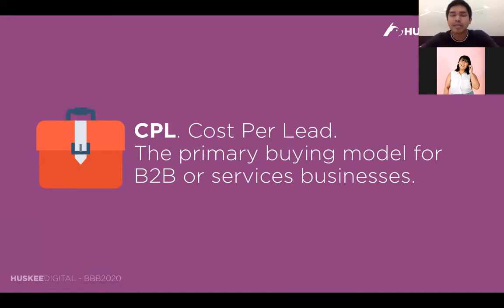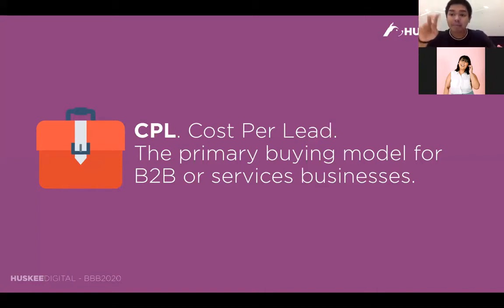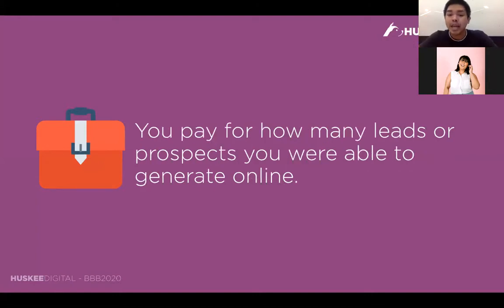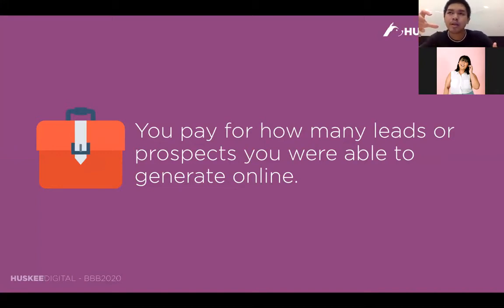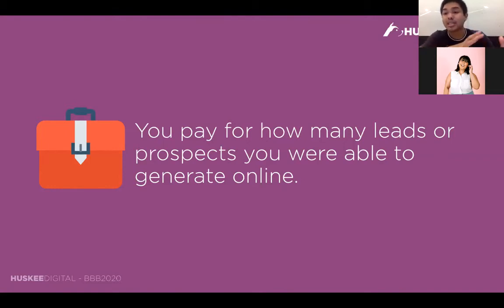Conversions can be divided into two categories. First: cost per lead, or CPL. This is the buying model typically for B2B or services businesses. For us, this is how we track our advertisements and ad budget — how much are we paying per lead. You measure this by how many prospects you're able to generate online. Your cost per lead could mean different things for your business — for example, it could just be someone who fills out your contact us form and sends that email.